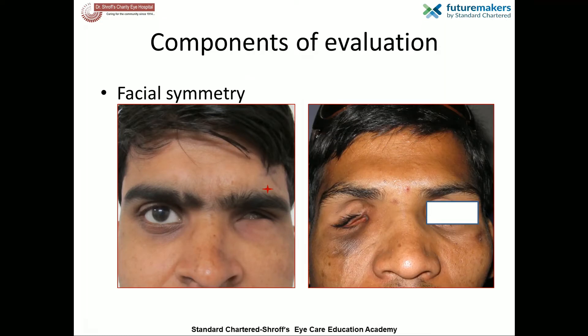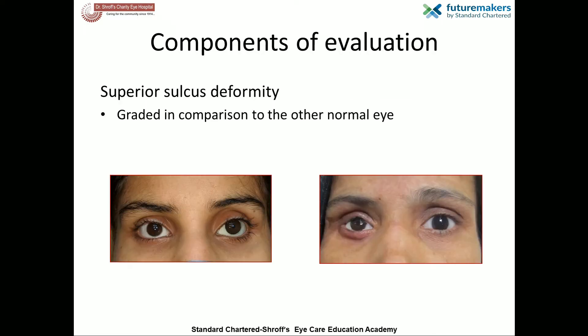Facial asymmetry can also be noted in cases of trauma when there is associated orbital wall fracture. The superior sulcus is a depression seen in the upper lid below the brow area. A deep superior sulcus — also called the superior sulcus deformity — is an indirect indicator of volume deficiency. The superior sulcus deformity is graded in comparison with the other normal eye, and a severe deformity is described when a deep superior sulcus is present throughout the length of the upper lid.